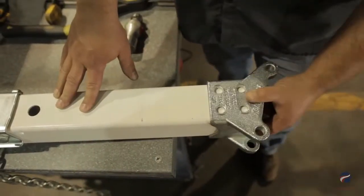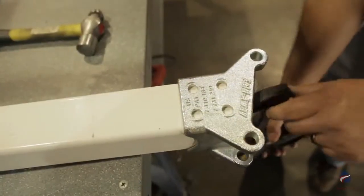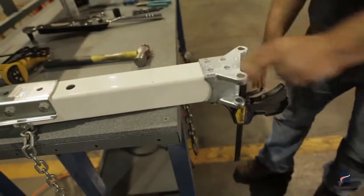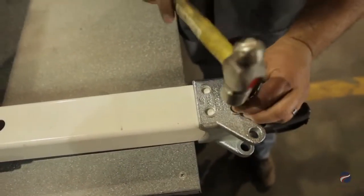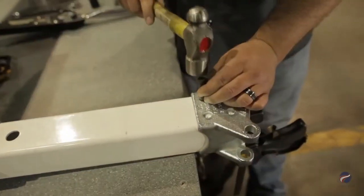Slide the pivot casting onto the trailer tongue until it hits the stops. Make sure it is straight and temporarily secure with the clamp. Using the included transfer punch, mark the location of the bolt holes top and bottom.